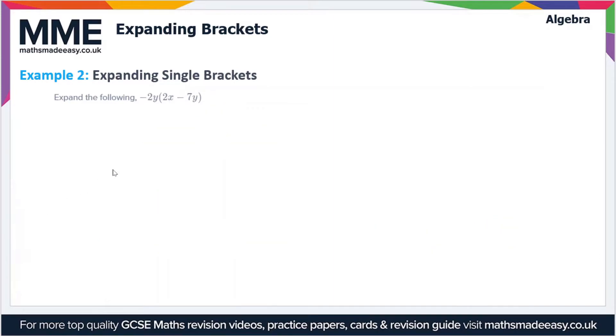Let's look at another example. This time we have -2y(2x-7y), so it's slightly more complicated. We're multiplying -2y by 2x and -2y by -7y. This is going to give us -2y times 2x and then -2y times -7y.